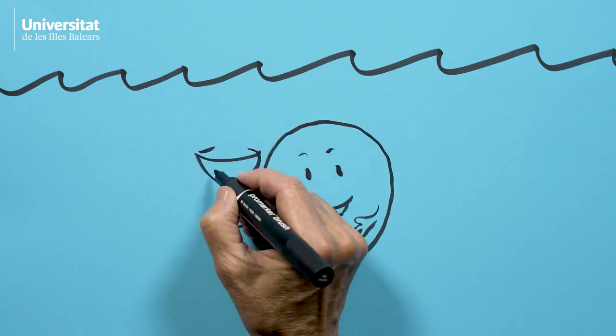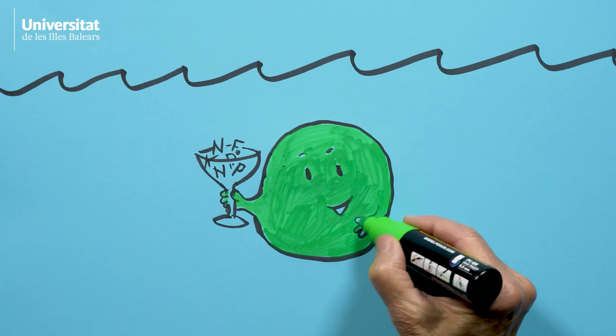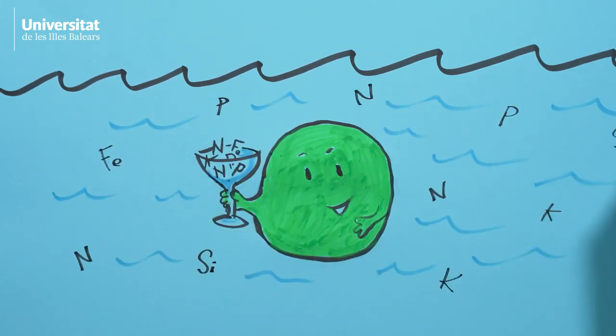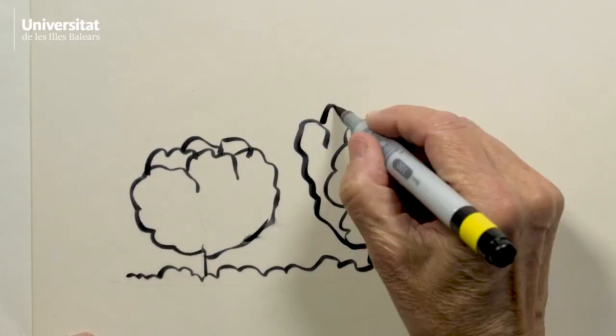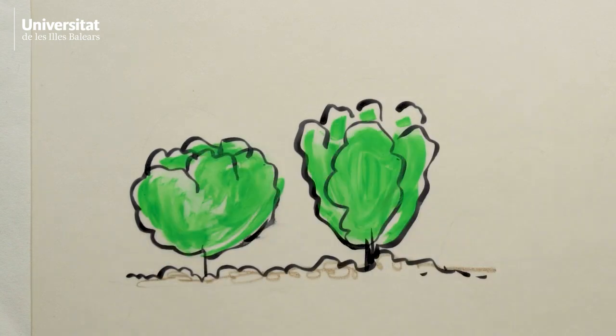But in order to live and reproduce, phytoplankton need more than just water, CO2, and sunlight. They also need elements like phosphorus and nitrogen. Correct, Prochlorococcus? Yep, she says that so. The same is true for a cabbage or a lettuce. It needs to absorb nutrients from the soil in order to grow.